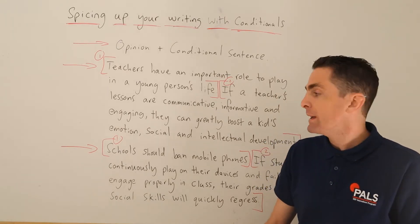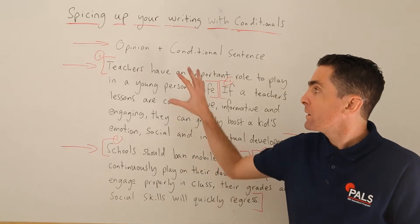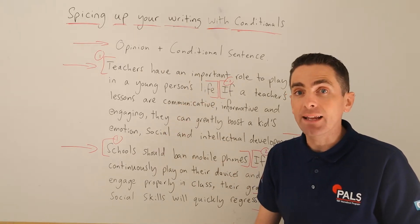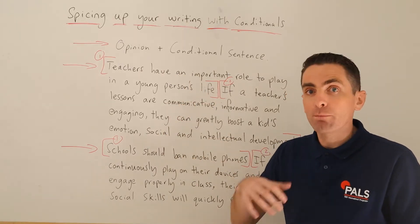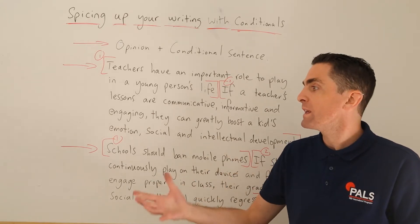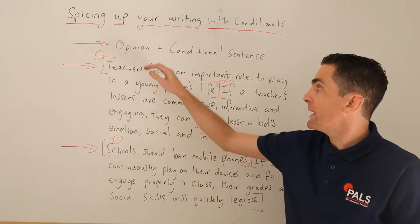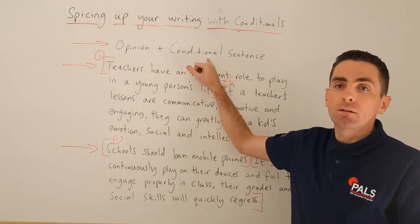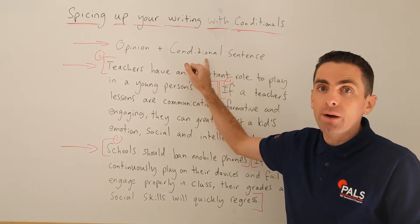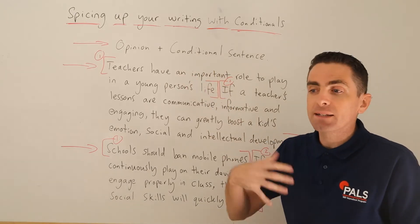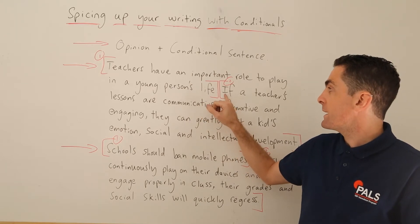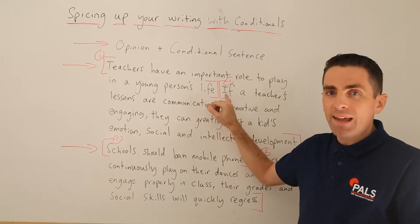So those are the two examples I want to show you of this little technique. I want you to practice this as much as you can at home. It's a lovely way to have a topic sentence and the second sentence of your body paragraph. Again, it adds some spice. It also, because you're using a conditional here — if —